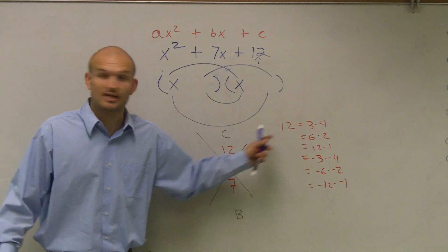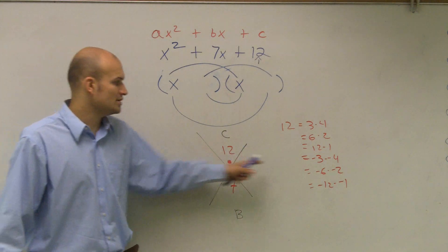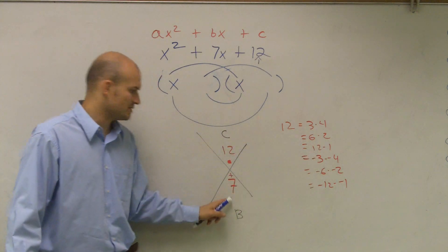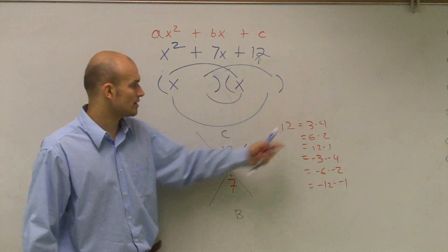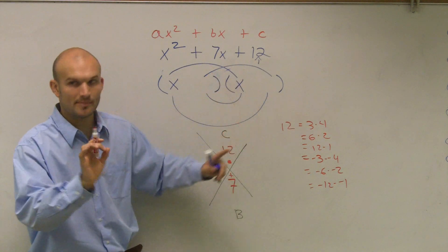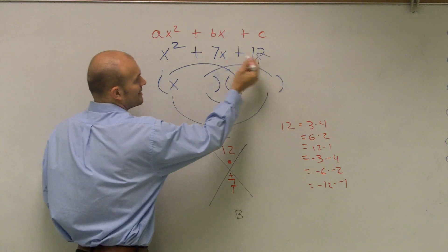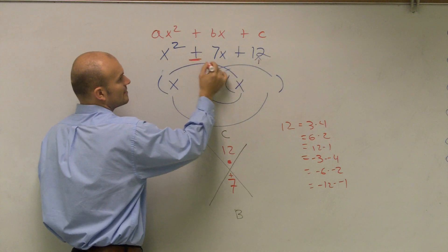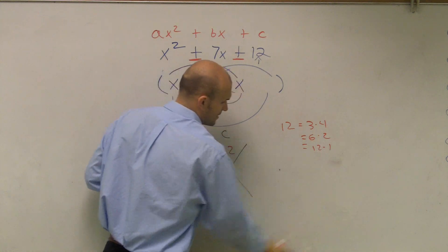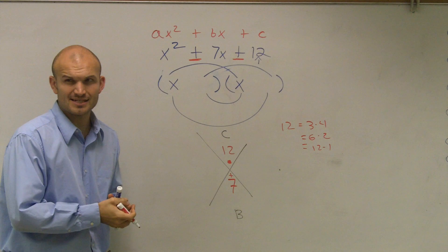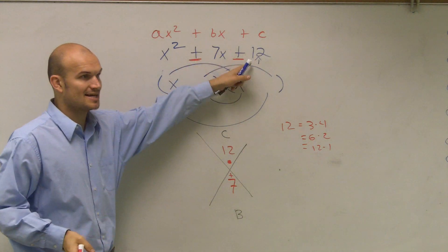Because when you multiply them, they're still going to give you a positive number. But when you add a negative number plus a negative number, do you get a positive number? No. So that's why only the positive solutions are going to work. So one thing to remember, which I actually forgot to tell you, whenever you have a positive and a positive, you're only going to think about the positive factors.